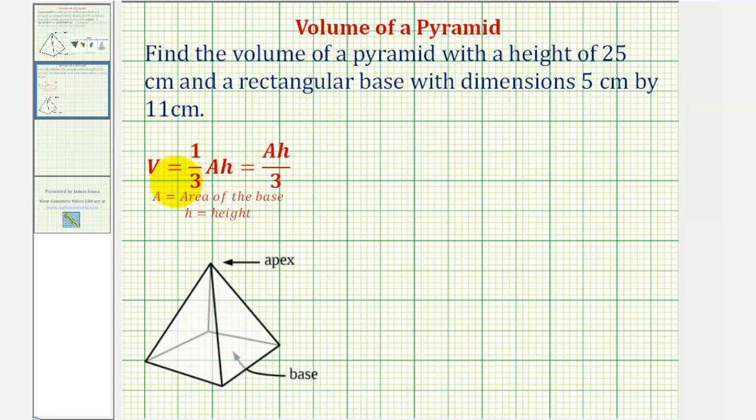The volume of a pyramid is equal to one-third times the area of the base times the height. In our formula, capital A represents the area of the base and H represents the height. We can also represent the formula as area of the base times the height divided by 3. Dividing by 3 is equivalent to multiplying by one-third.